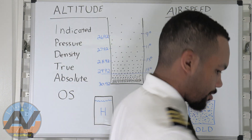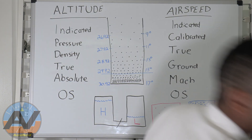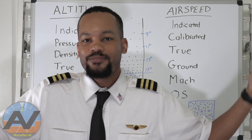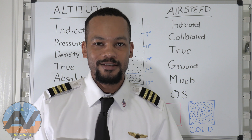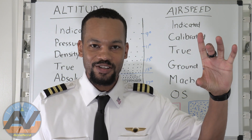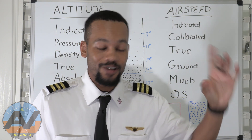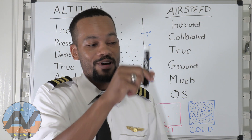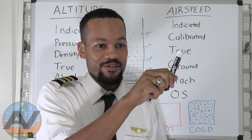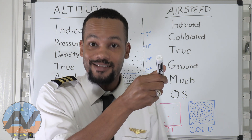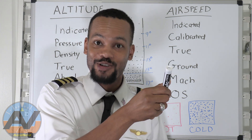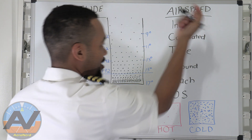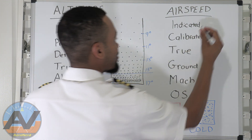Starting out with airspeed: indicated. Indicated is literally what it says — it's what your instrument is actually indicating. So if your airspeed indicator is indicating 60 knots, then your indicated airspeed is 60 knots. That's literally what indicated is.